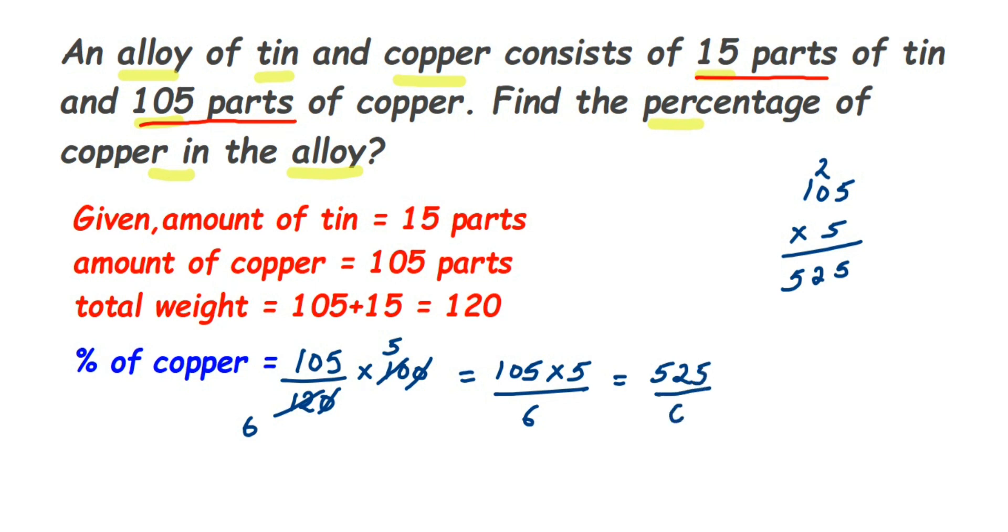So we're going to get the answer in decimal here. Let's divide these two numbers. So 525 divided by 6. So we know that 6 8s is 48. That's the nearest number. When we subtract it, 4 will be the remainder. Drop this 5. We got 45.